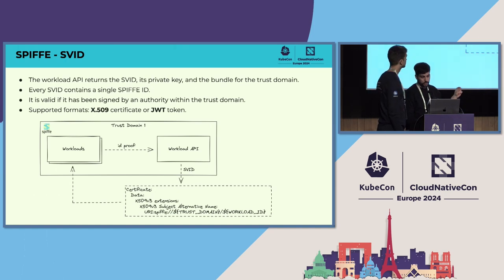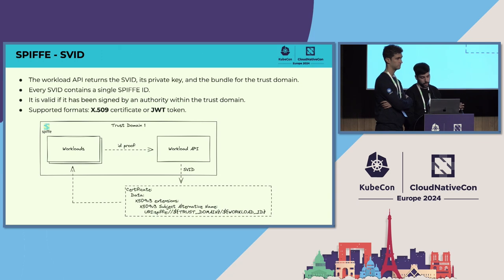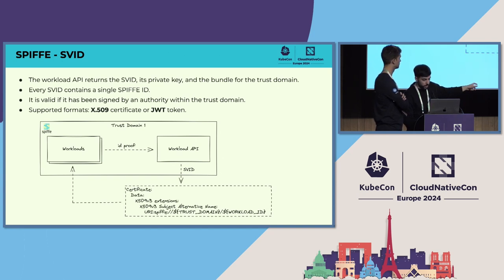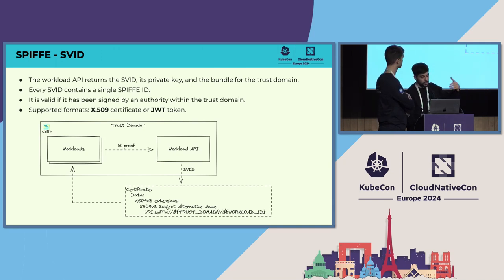The important thing here is the SVID. There are two different formats of SVID: the X.509 certificate and the JWT token. The X.509 certificate is preferred over the JWT token, so in the rest of the talk when we talk about SVIDs, we are talking about X.509 certificates. It's a certificate generated by the Workload API with the SPIFFE ID inside. In the extensions, in the subject alternative name, the SPIFFE ID is embedded. The Workload API returns the SVID, the private key, and the trust bundle of the CA of the trust domain to the workload.